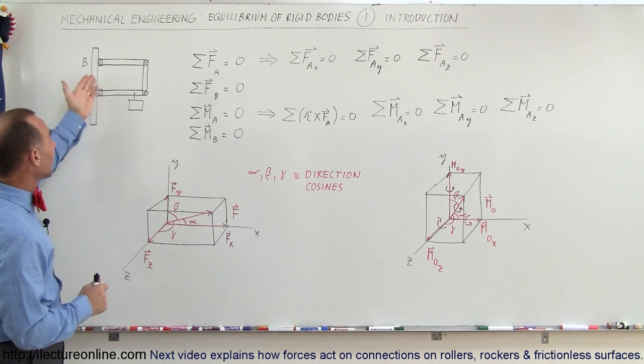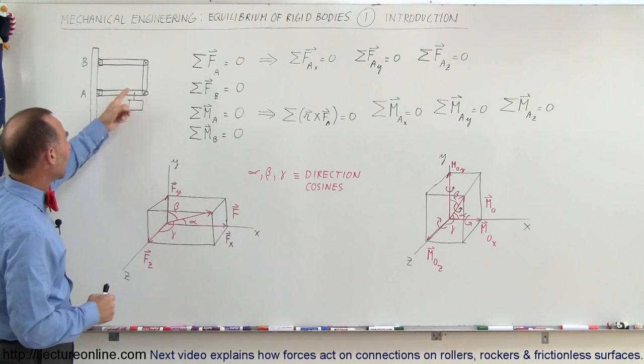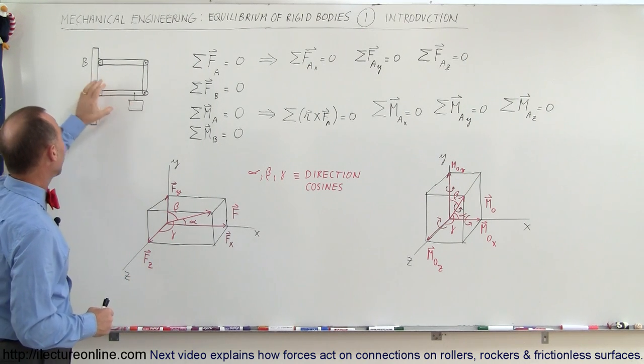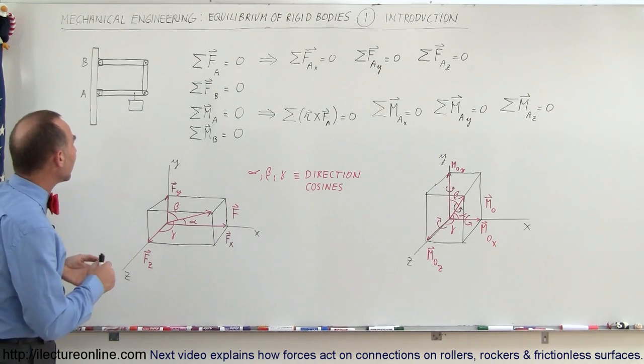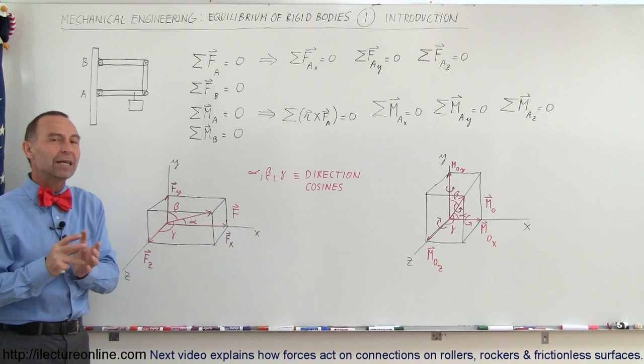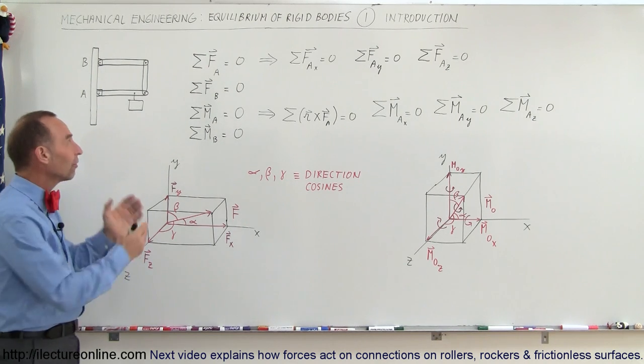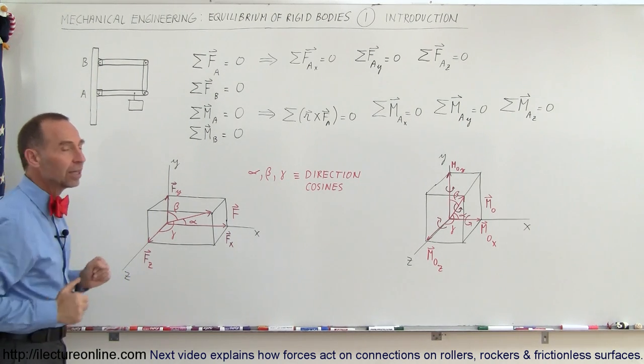So here's an example where you can have a structure that is solid. We have a mass hanging from it and it's connected to a post at A and B, and of course there's going to be forces acting at A and B and there's going to be moments at A and B. We're trying to calculate those moments in a situation like this where everything is in equilibrium.